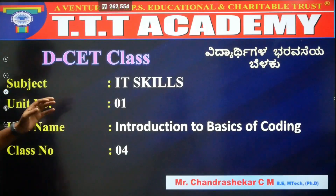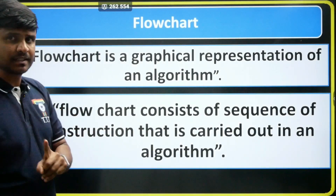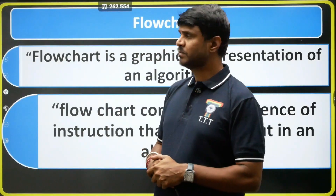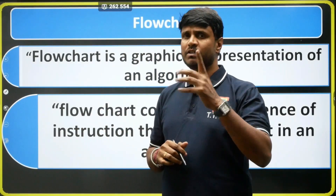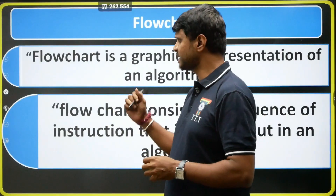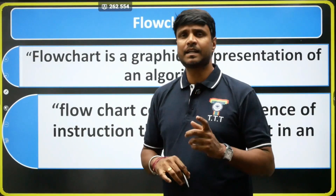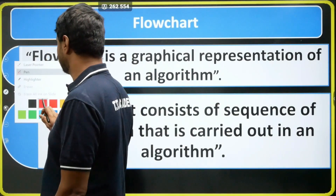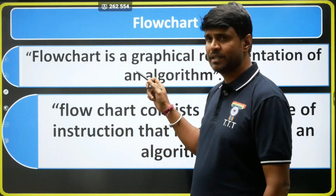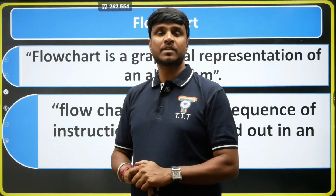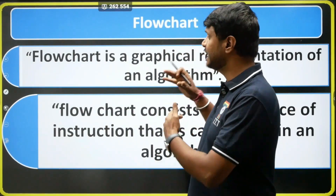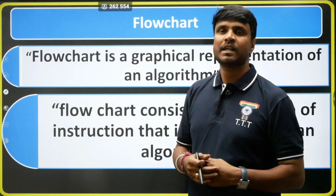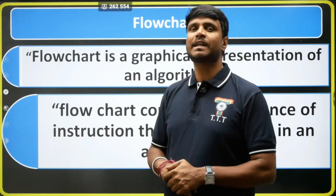Based on that flowchart, you people will get one mark. Last class we discussed based on that algorithm, so based on that you will get one mark. So what is the flowchart we have? Based on that flowchart, 100% you will get one mark. We have a definition and symbols — based on those you will get one mark.